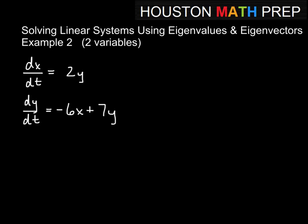So remember, this system is of the form x prime equals A times x. A is our coefficient matrix, so for this example, A would be the matrix 0, 2 for the first equation 0x plus 2y, and then -6, 7 for -6x plus 7y.